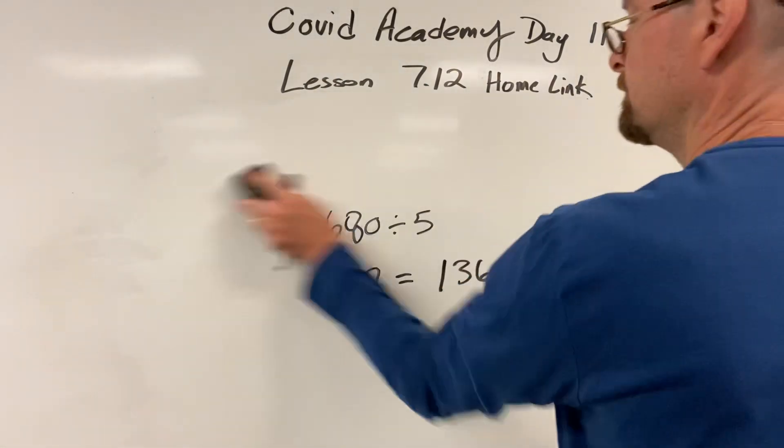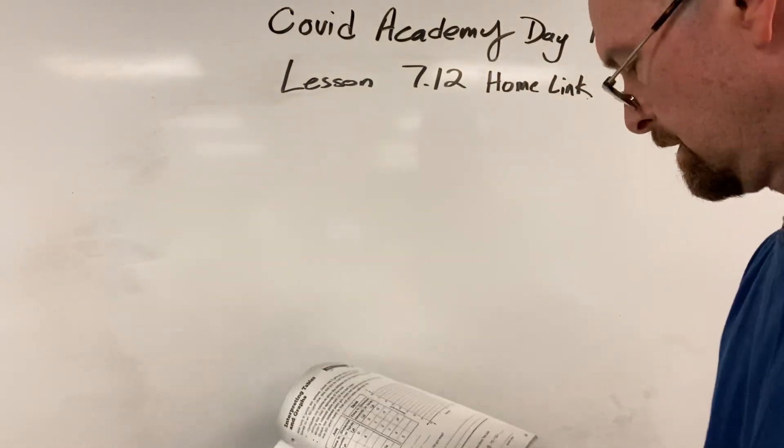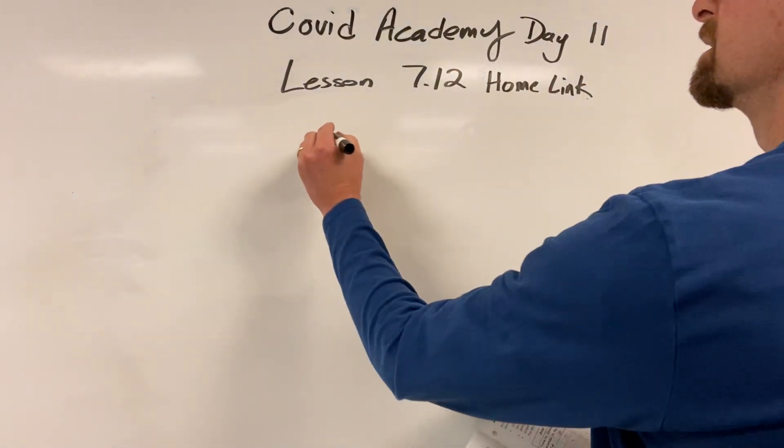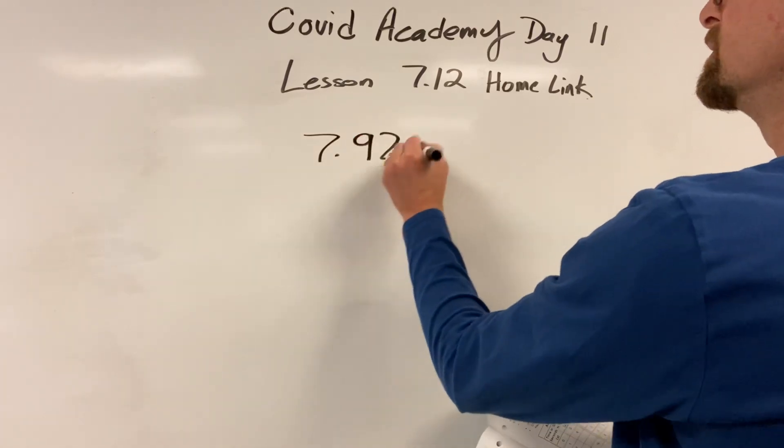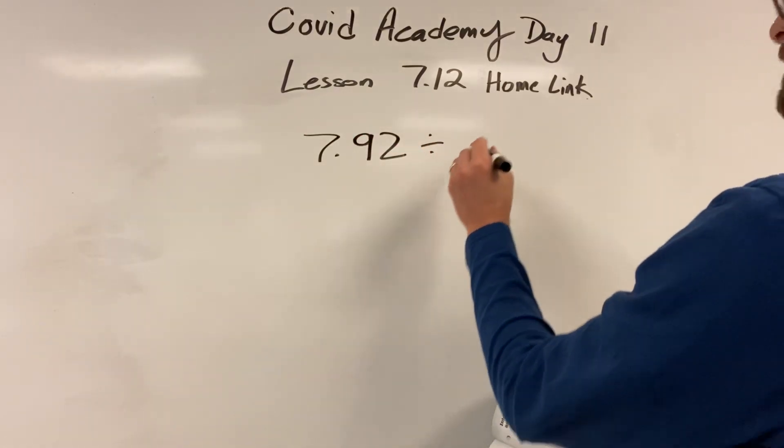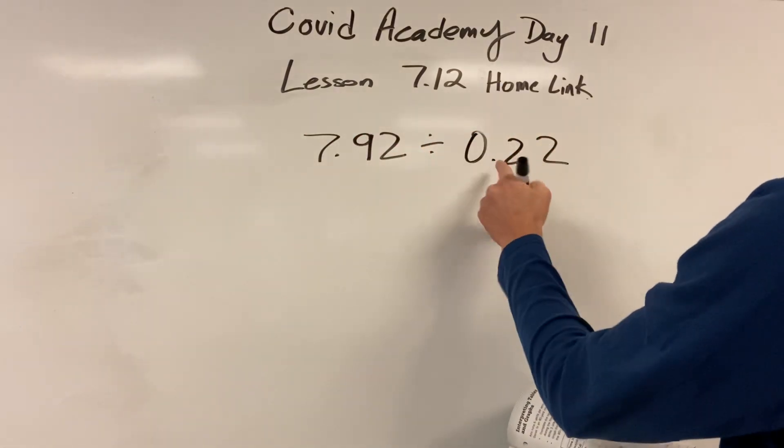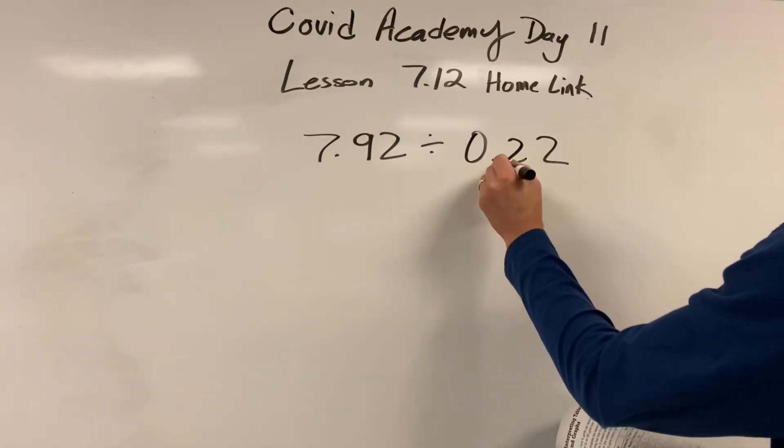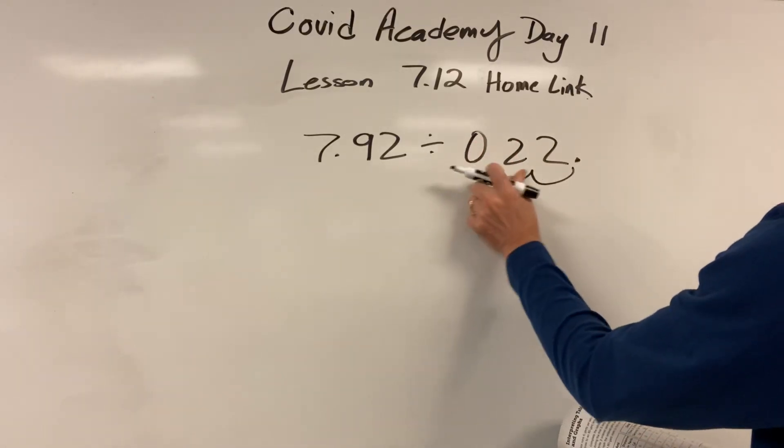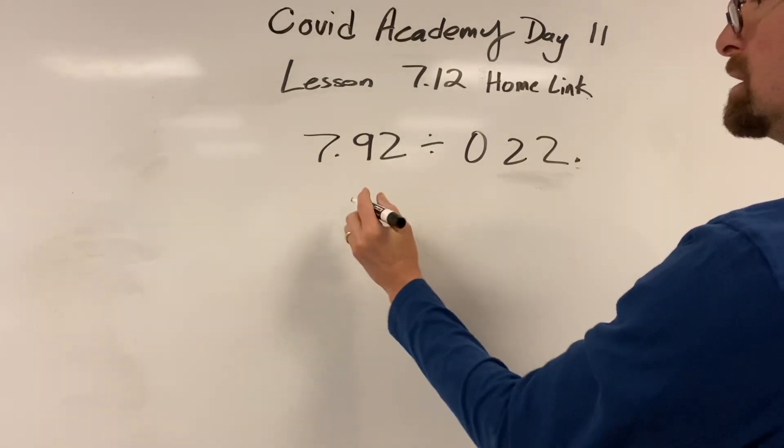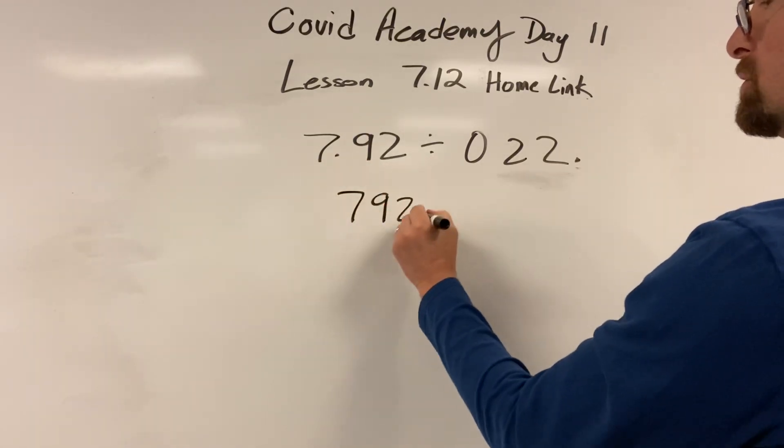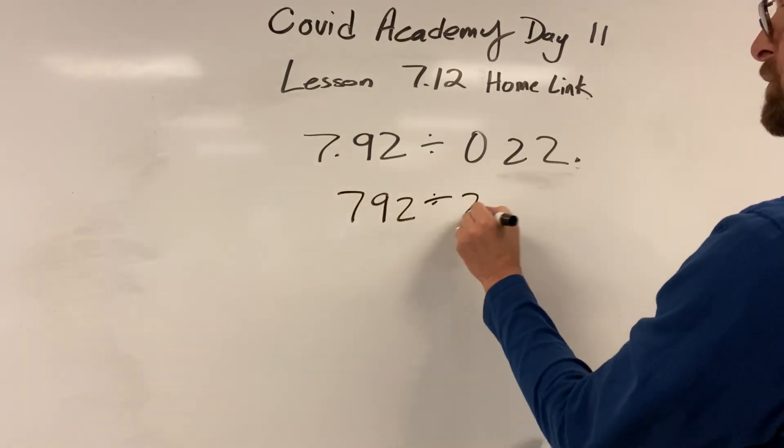Alright, last one. Let's do this thing, people. Get it. 7.92. Oh, this is annoying. 7.92 divided by 0.22. This time you've got to go 1, 2. 1, 2. So we end up with 792 divided by 22.